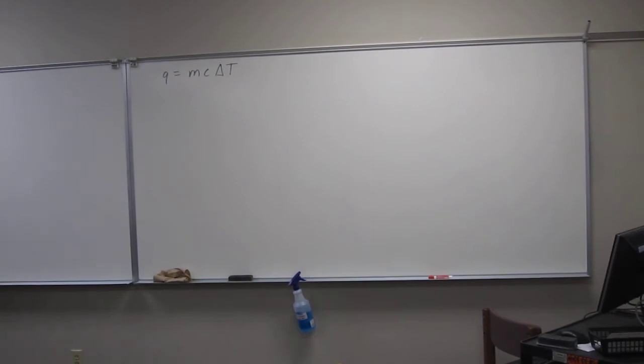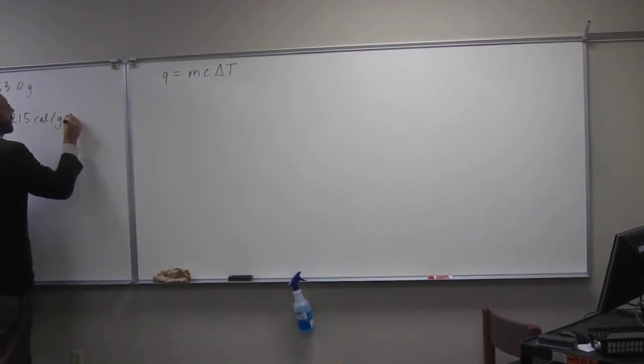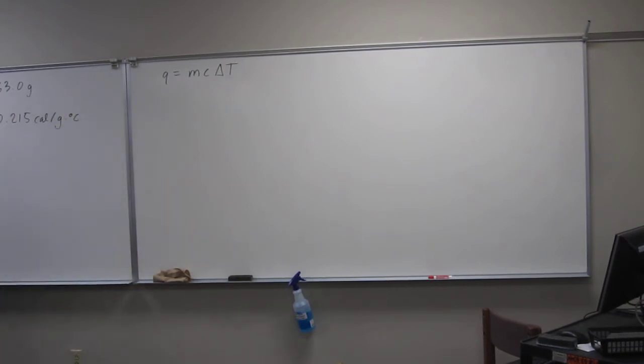And then it gives you some of these variables. It gives you M, which is the mass of the aluminum piece, 63.0 grams. It gives you the specific heat, which is C, 0.215 cal per gram degree C. And I'm going to change that to cal over so we can cancel our units eventually.